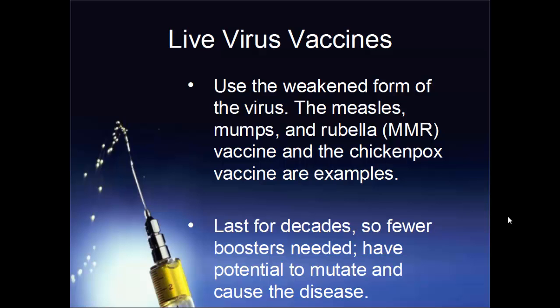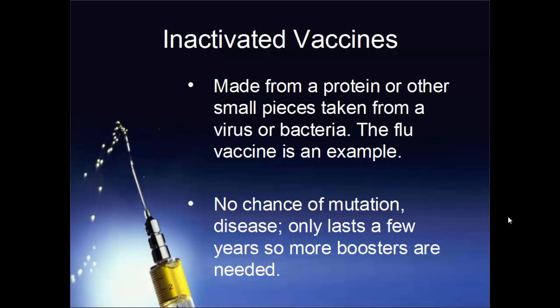The next class is inactivated vaccines, which are made from a protein or small piece of the bacterium or virus itself. A common example is the flu vaccine. Because it is inactivated, there's no possible way it can mutate to give you the disease — it is essentially a dead organism and can't become alive again. The downside is these vaccines only last a couple of years at most, so you have to get more boosters more often.